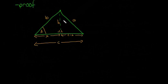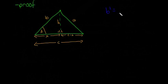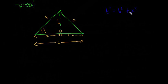The next step is to apply Pythagoras twice — once in each of the two smaller right-angled triangles. In the left triangle, b is the hypotenuse, so b² = h² + x². Rearranging, we get h² = b² − x². We isolate h² because we'll need it shortly.